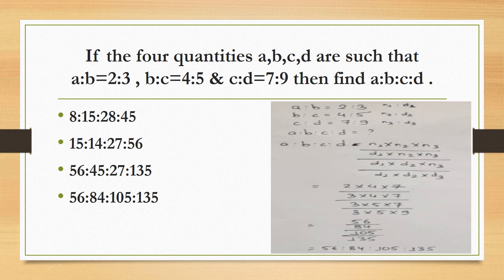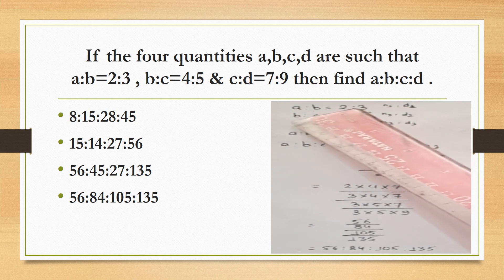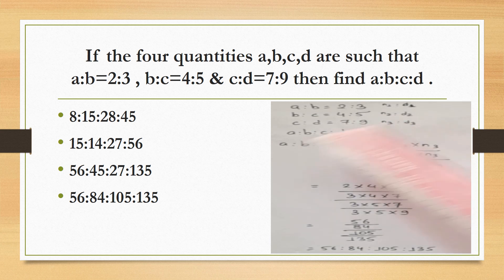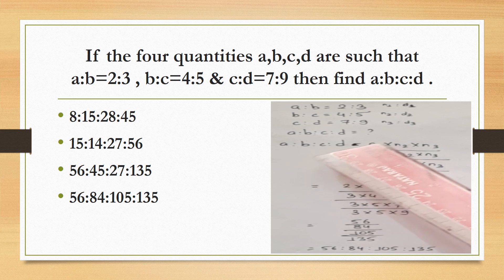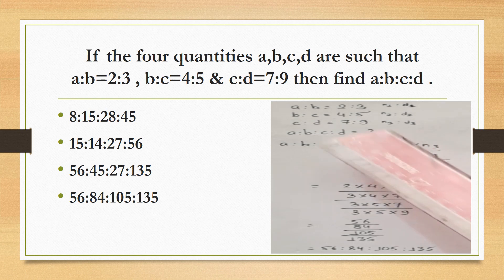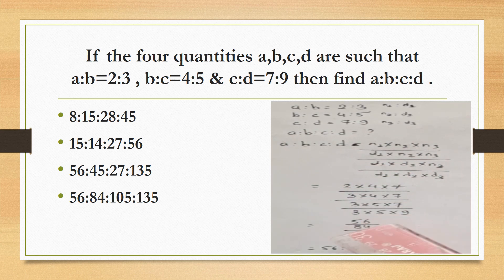If 4 quantities a, b, c, and d are such that a:b equals 2:3, b:c equals 4:5, and c:d equals 7:9, then find a:b:c:d. Using the compound ratio method with values n1=2, d1=3, n2=4, d2=5, n3=7, d3=9 and the formula n1×n2×n3 : d1×n2×n3 : d1×d2×n3 : d1×d2×d3, the result is 56:84:105:135.